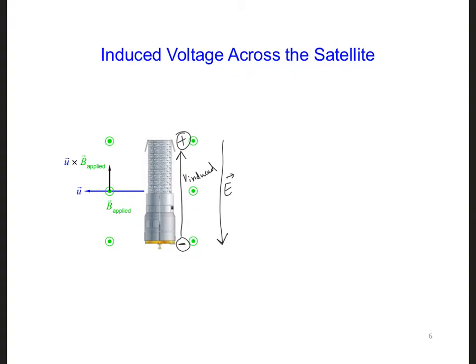What might be of more interest to us is this V induced that results from all the electron migration. We can solve for the induced voltage, the EMF, between the ends of the satellite by integrating the electric field along a line extending across the length of the satellite.